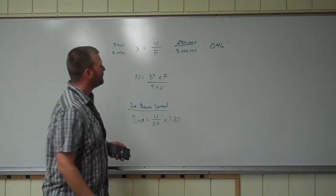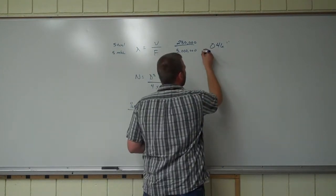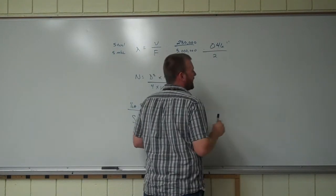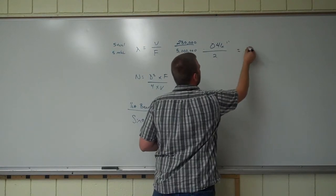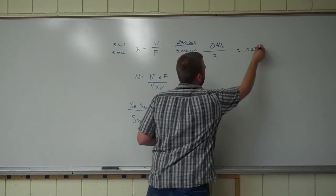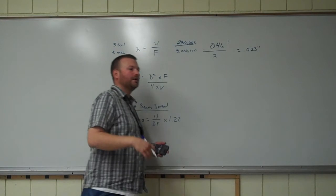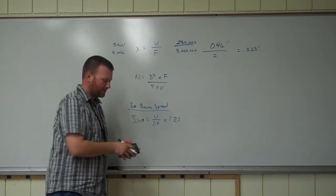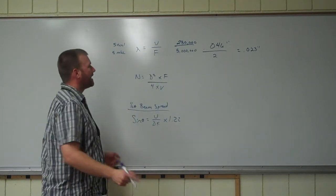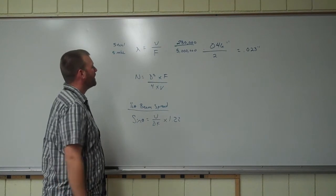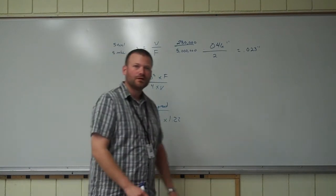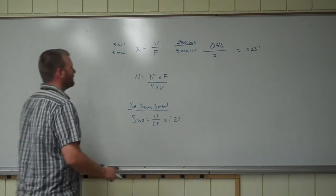230,000 divided by 5,000,000 equals 0.046 inches. And from what you've read already, you can tell that if you're looking for a defect, that defect needs to be at least half the wavelength. So that's going to be 0.023 or 23 thousandths, meaning in order to see that defect for that setup, it has to be at least 23 thousandths of an inch wide to pick it up. Relatively simple.